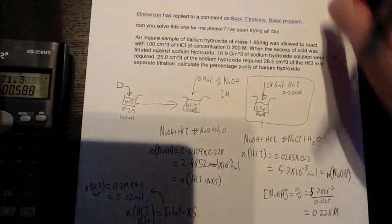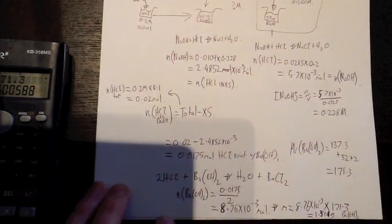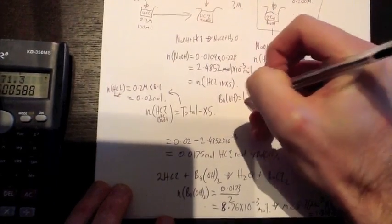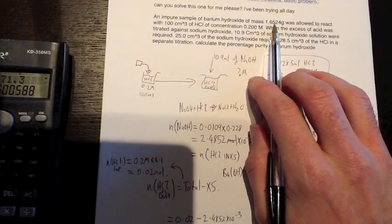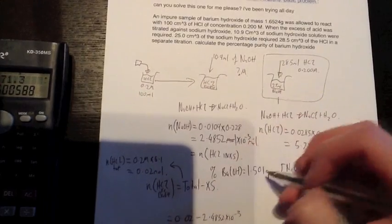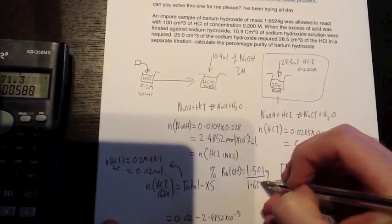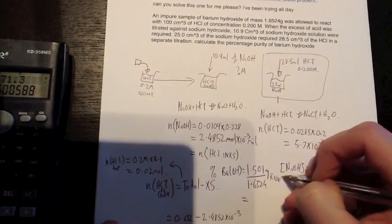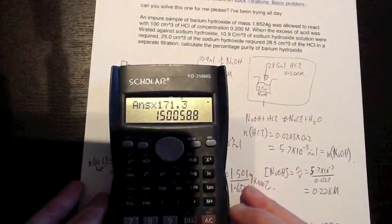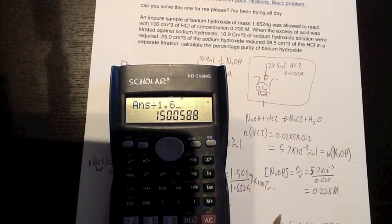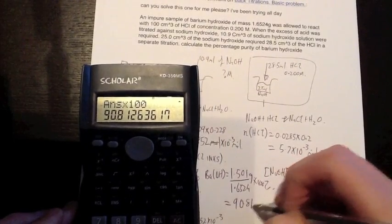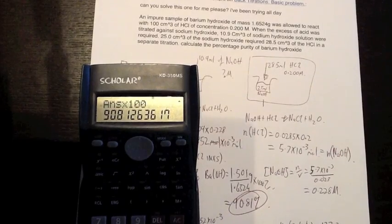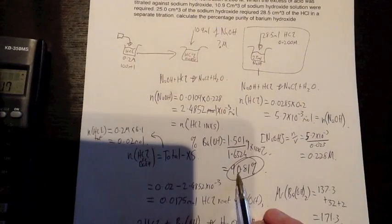The question asked for you the percentage purity. So you look at, I'll put it in the middle here, so our barium hydroxide equals 1.501 grams. Our total sample is 1.6524, so our percentage of that divided by the total, 1.6524 times 100%, so let's move through that, divided by 1.6524 times 100 equals 90.81%. Alright, there we have it. So our percentage purity of barium hydroxide in our sample is 90.81%.